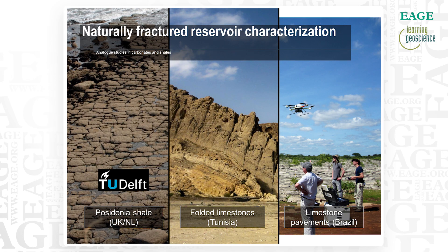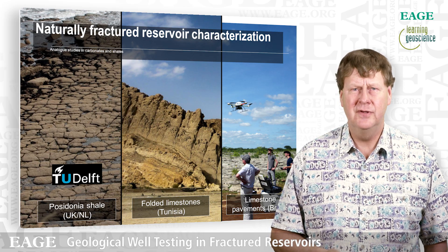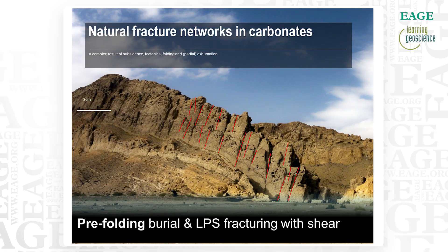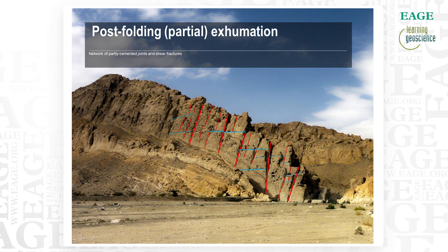Here are some images of fractured outcrops. The team from Delft uses a drone to get up close and capture side-on photographs of these large outcrops. You can see the natural fracture network on the dipping outcrop. These include pre-folding burial fractures, syn-folding stress fractures, and post-folding exhumation fractures. So there are a number of different phases of fractures detected, and these have all been mapped by Kevin at Delft.